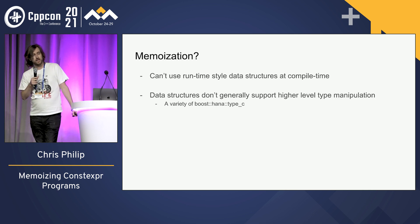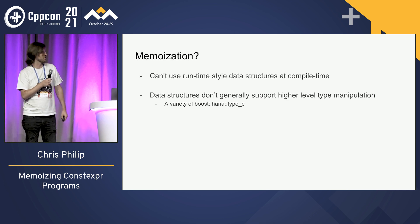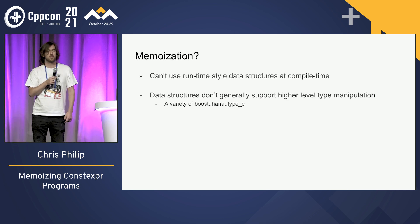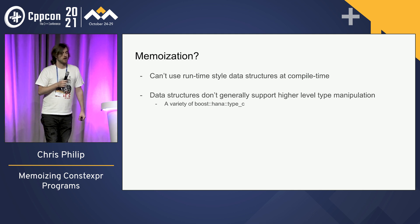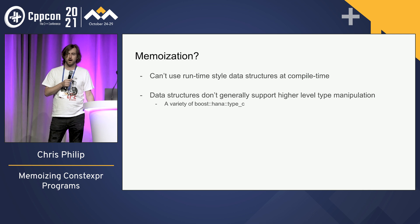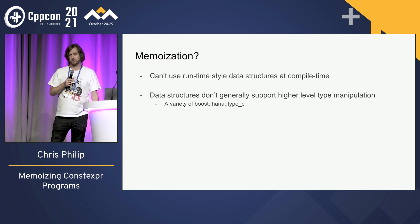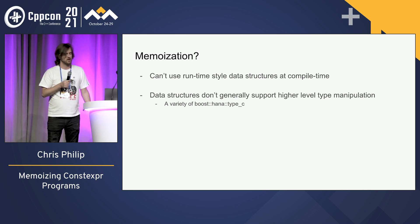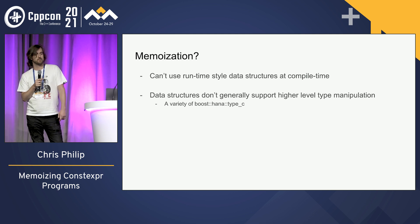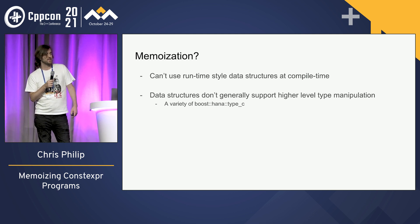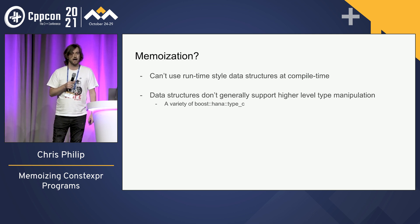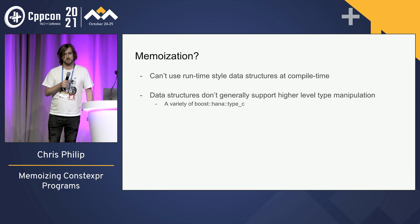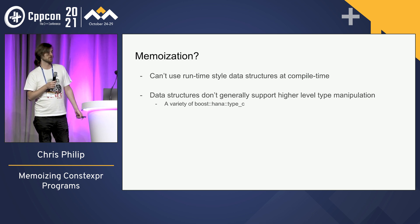One common solution that everyone who wrote a Fibonacci program in college learned about is memoization. Can we memoize our constexpr function? Unfortunately, the traditional way to memoize would be to use a map or something, but we can't use those types at compile time. Additionally, types like std::map don't generally support higher-level type manipulation, such as boost HANA type C, so we can't put multiple different kinds of types in our map.